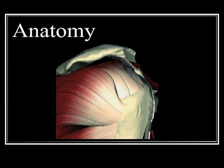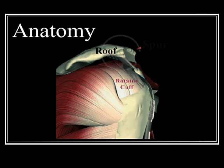Due to its importance and predisposition to injury, we will, for our purposes of discussion, call this small superior tendon the rotator cuff. A bony arch called the acromion, or roof, covers the shoulder and protects the rotator cuff tendons which slide back and forth beneath its curvature.